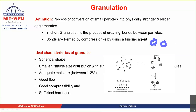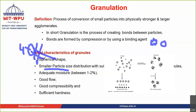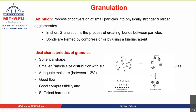Smaller particle size distribution means that when you do sieve analysis, most of the granules — say 80 to 90 percent — are retained on one kind of sieve, for example a 40-mesh sieve. When that happens, we say it has a smaller particle size distribution, meaning the particles are not of different shapes but are of uniform shape and uniform size. That is the characteristic we expect from a granule.